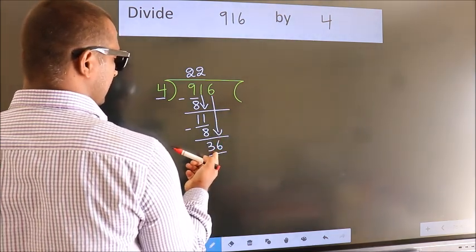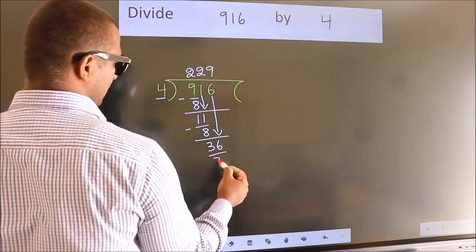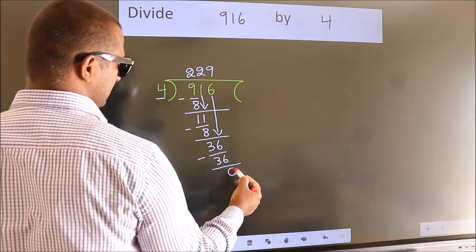When do we get 36? In 4 table, 4 9s 36. Now we subtract. We get 0.